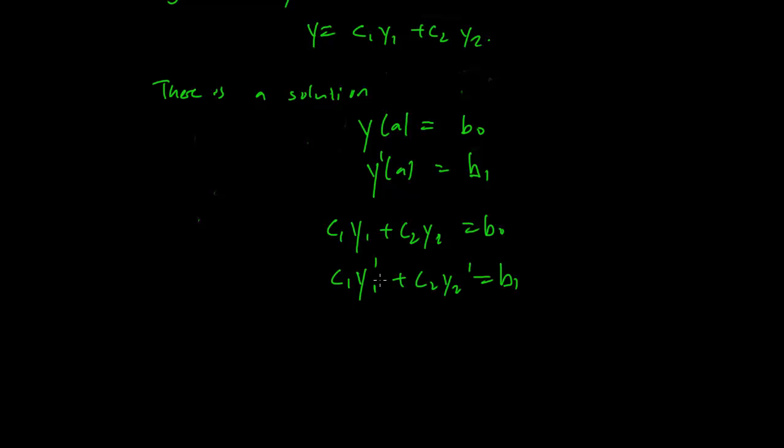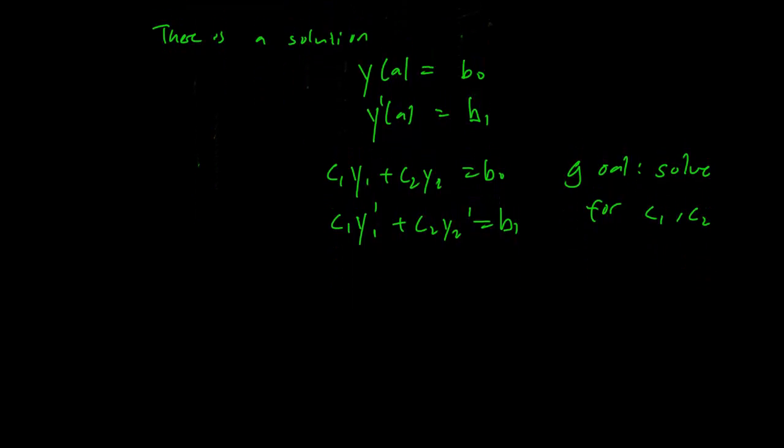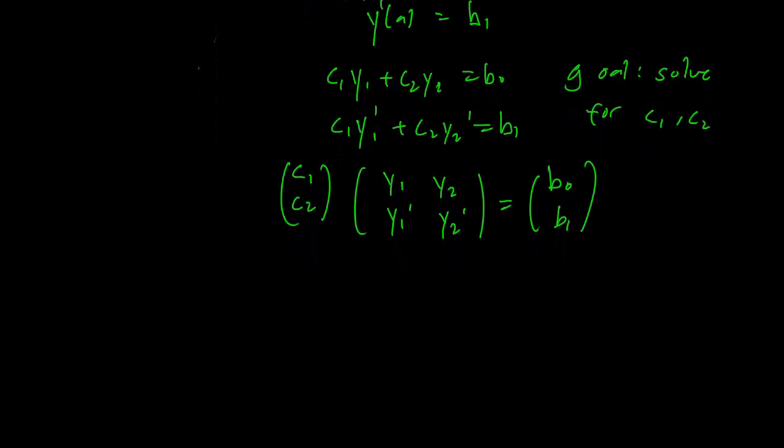So here's what we're at. We're trying to show that you can express this solution y in terms of y1's and y2's. So our goal is to find c1 and c2 so that this equation works. Goal: solve for c1 and c2. And it turns out that we can write down this in terms of a matrix equation [c1; c2]. And this matrix equation should look pretty familiar to you because we have a Wronskian in the middle here.